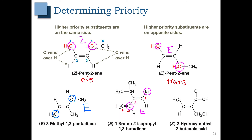In the last example, on the left-hand carbon we have a carbon and a hydrogen — carbon wins because it has the higher atomic number. On the right-hand carbon, we have two carbons, so we have to see what's attached. The bottom carbon is attached to one O, and the top carbon is attached to two O's — top carbon wins. Those two priority groups are on the same side, so we're going to get Z configuration.